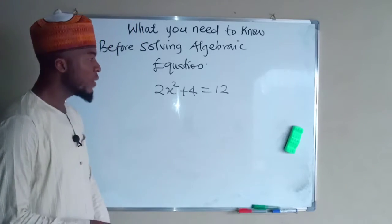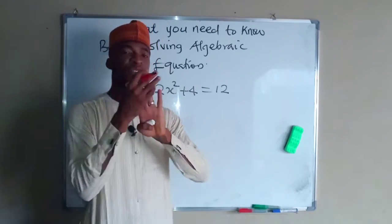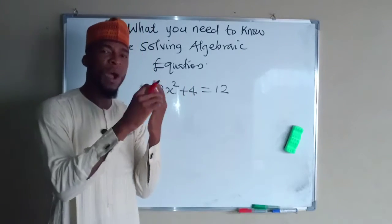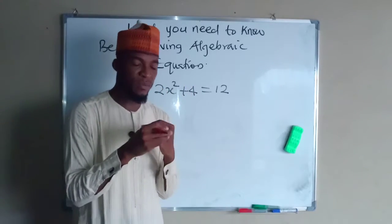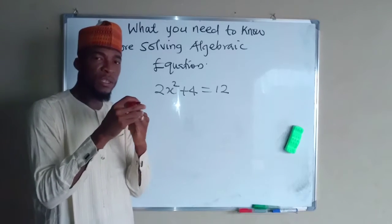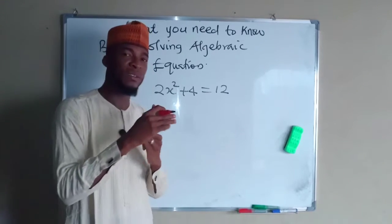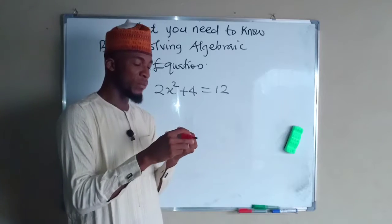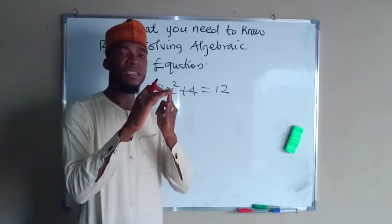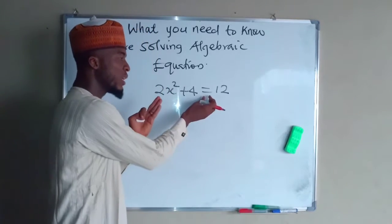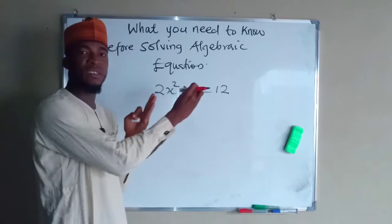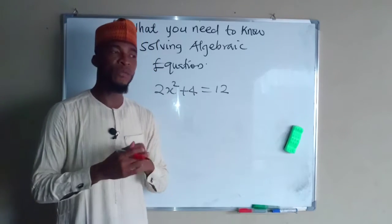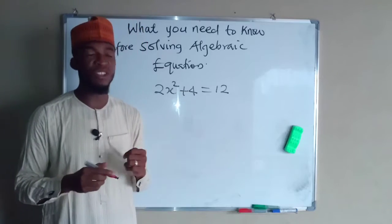The equality sign means what is on the left hand side is equal to what is on the right hand side. So the three basic things you need to know: one, you need to know the basic operations; secondly, you need to know their inverses; and lastly, you need to know the function of the equality sign itself.